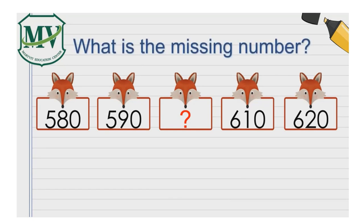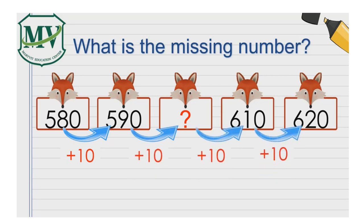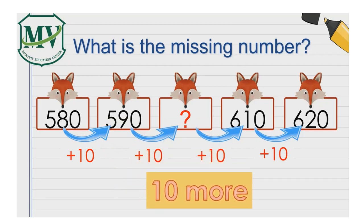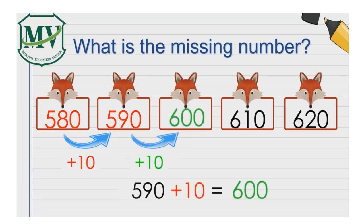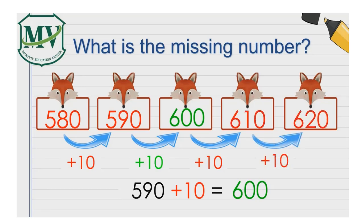Can you figure out what is the missing number? Let's compare 580 and 590. 590 has 10 more than 580. We apply the same number pattern to the next numbers. The number pattern is 10 more. 580 added by 10 is 590. 590 added by 10 is 600. 600 added by 10 is 610. Added by 10 is 620. The missing number is 600.